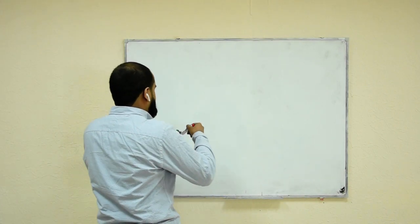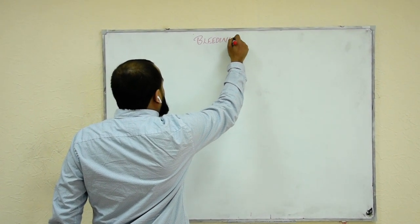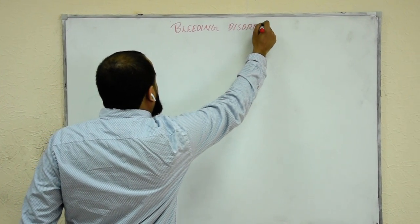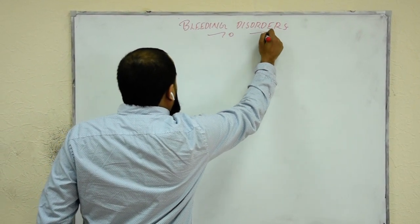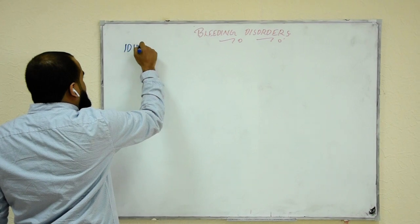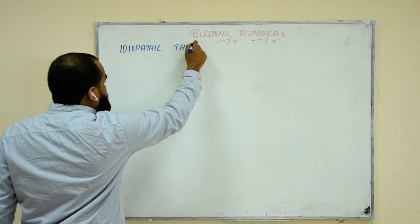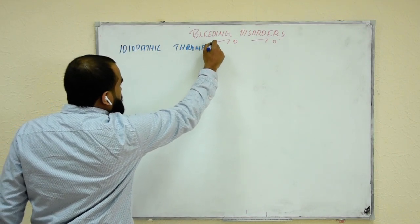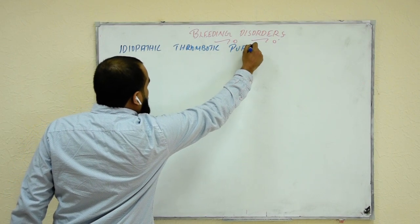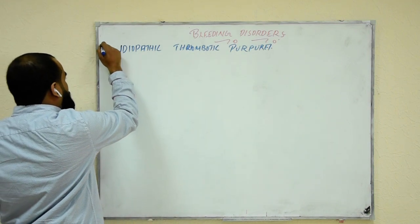We are going to study a very important topic called bleeding disorders. Many of us have a lot of confusion about bleeding disorders. It includes many things: first of all, idiopathic thrombocytopenic purpura — there is ITP.